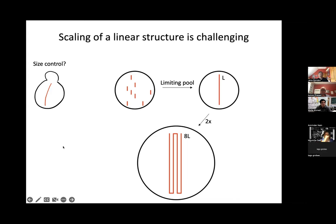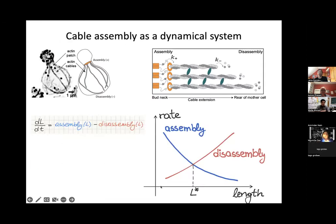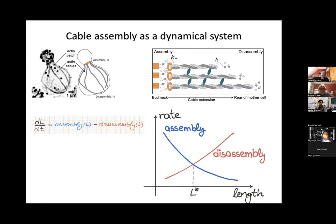In the remaining time, I'll give you some of the ideas we've tried in understanding what — if not the limiting pool — controls cable length. We've taken an approach from dynamical systems theory: if I want to describe the growth of these cables, I write a differential equation saying the rate of change of length equals some assembly term minus some disassembly term, both potentially length-dependent. If assembly and disassembly change with length in a particular way, there will be a stable fixed point — a steady-state length — where birth equals death and small fluctuations return to that point.